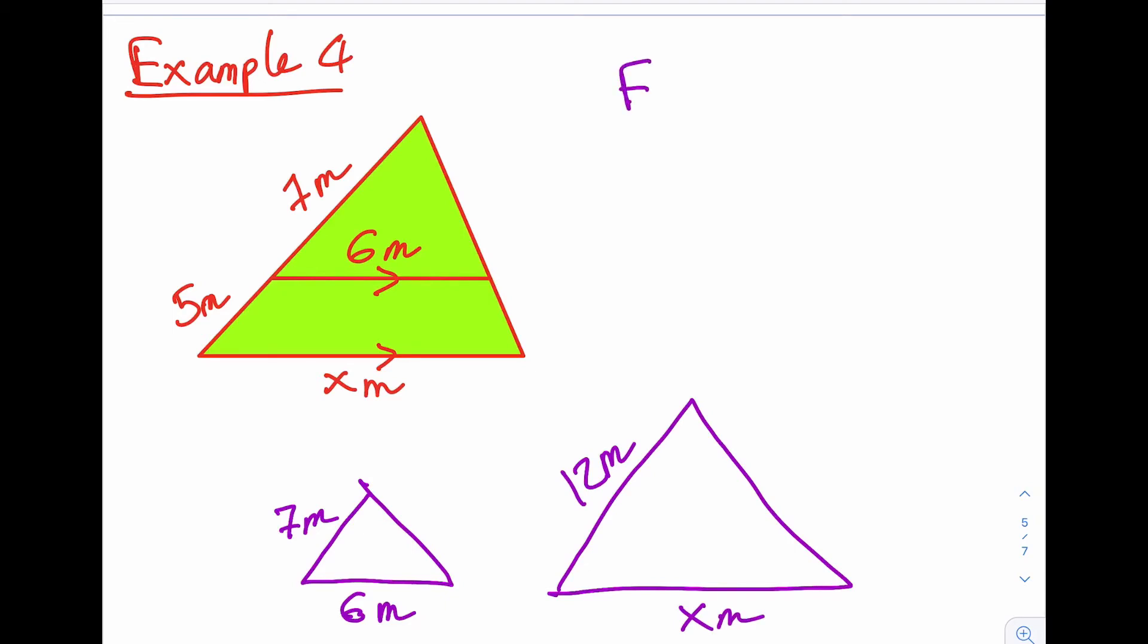We're trying to find an enlargement scale factor because we're trying to find the big side. So we just take our 12 over 7. Now just leave it like that. And now to find X, we do 12/7, 12 over 7 times the same size as X, which is 6.